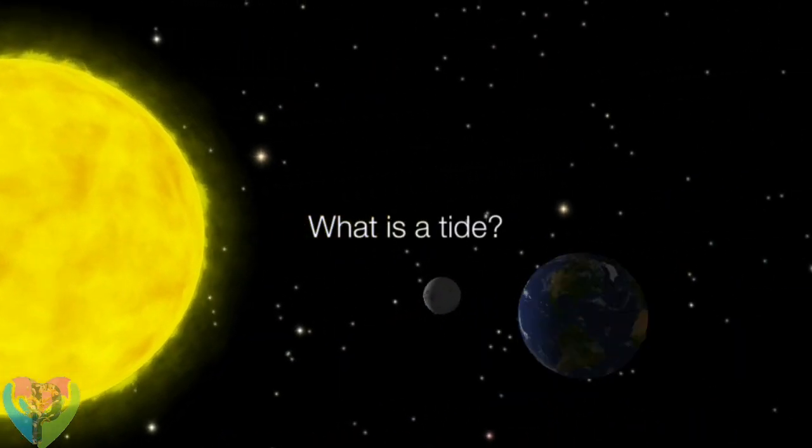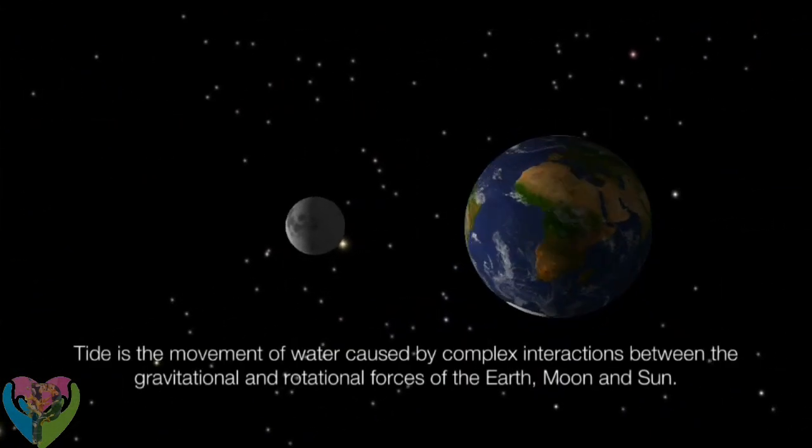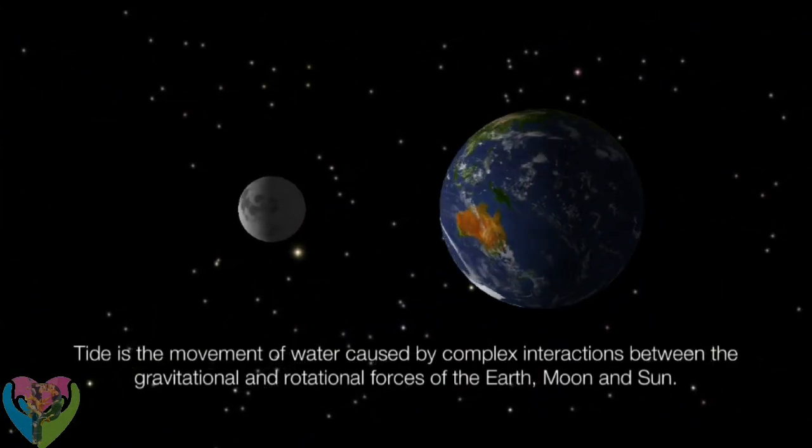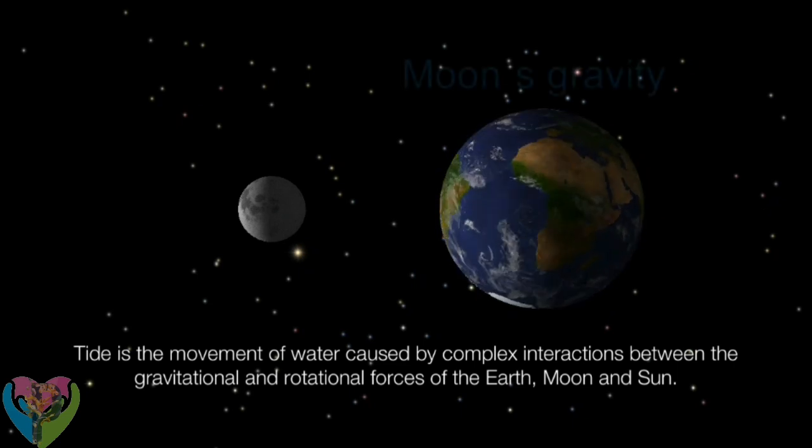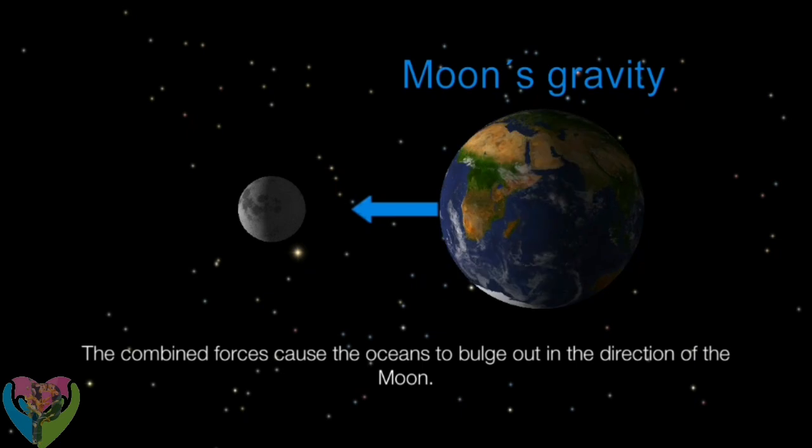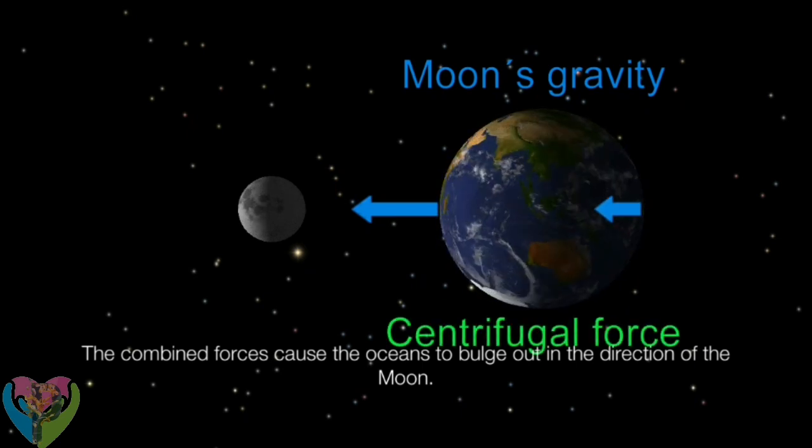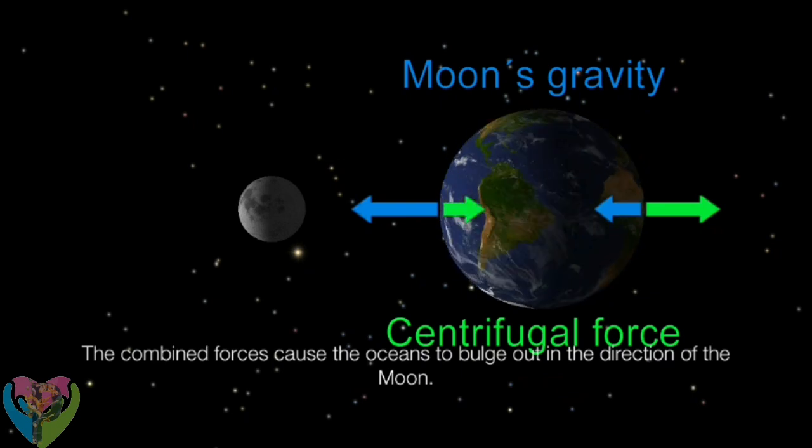What is a tide? A tide is not just the rise and fall of the ocean water. Tide is the movement of water caused by complex interactions between the gravitational and rotational forces of the Earth, Moon, and Sun.